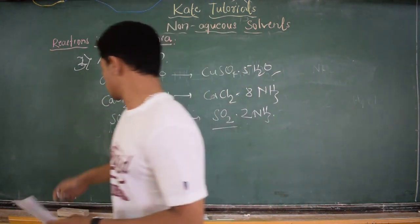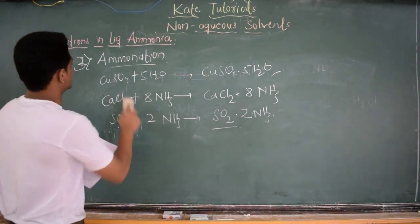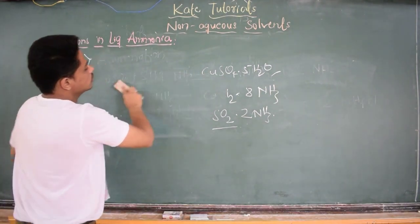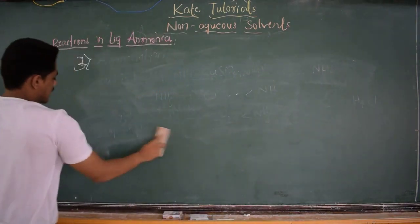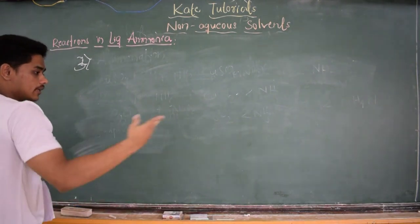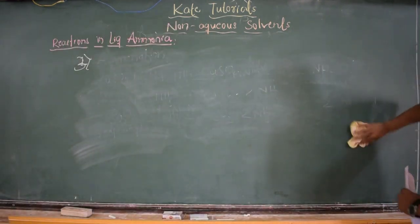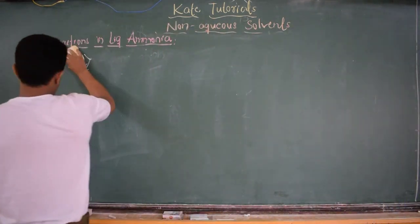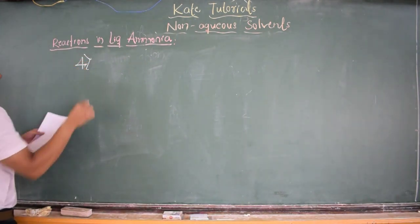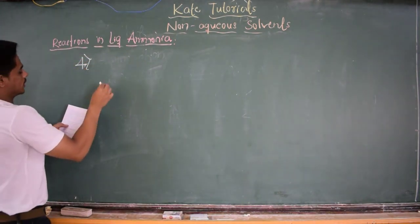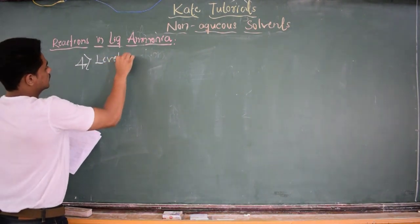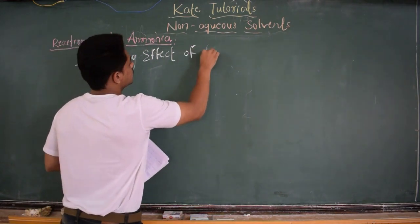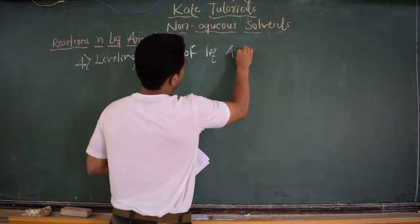The fourth reaction type is the levelling effect of liquid ammonia. This was also discussed in the previous video, but let me cover it here specifically for liquid ammonia. The levelling effect of liquid ammonia is an important property of this solvent.